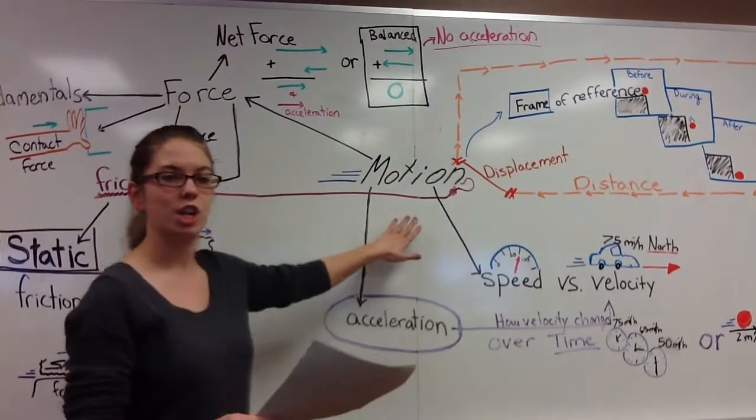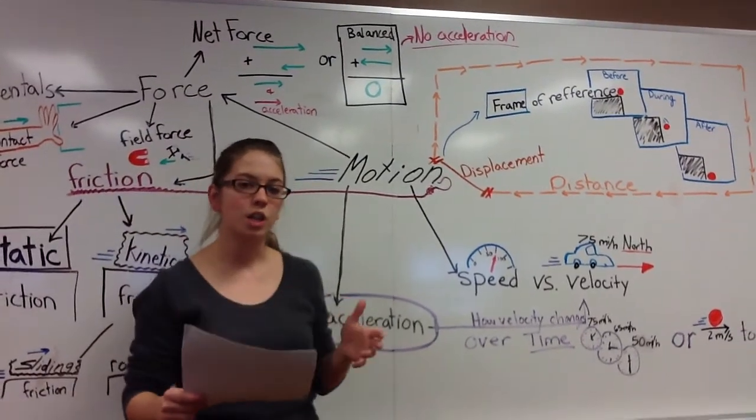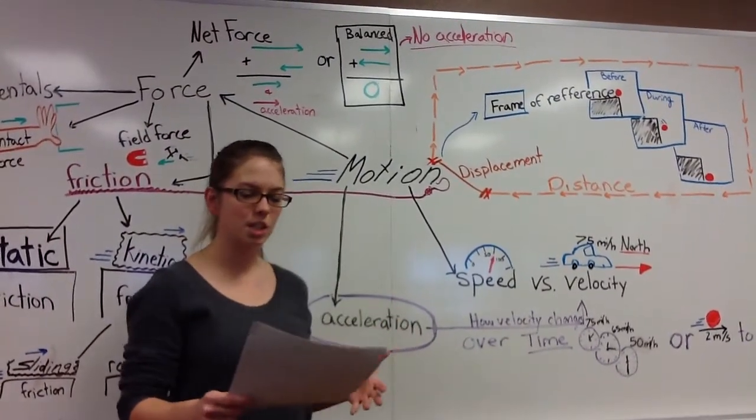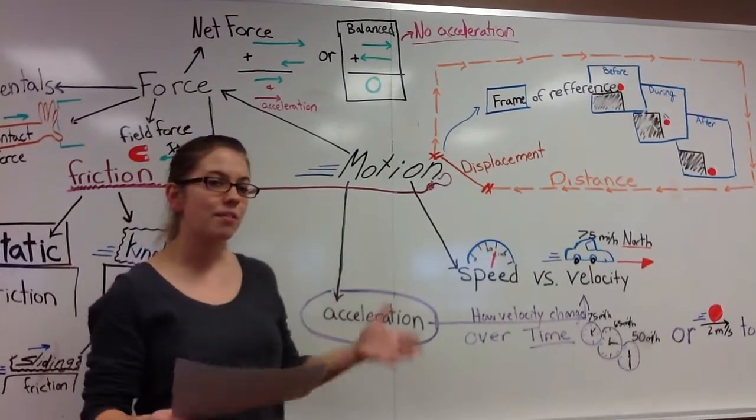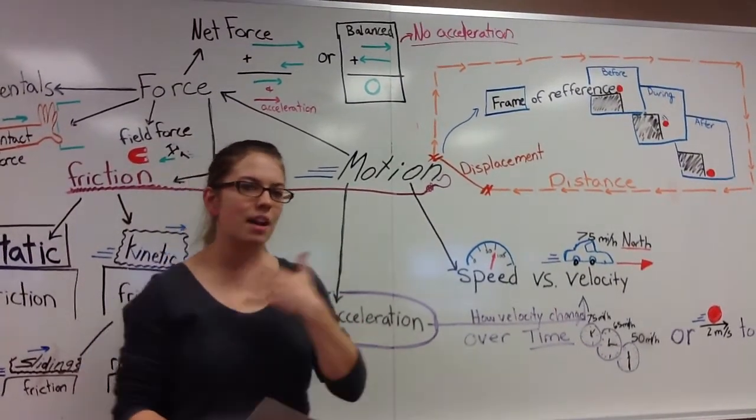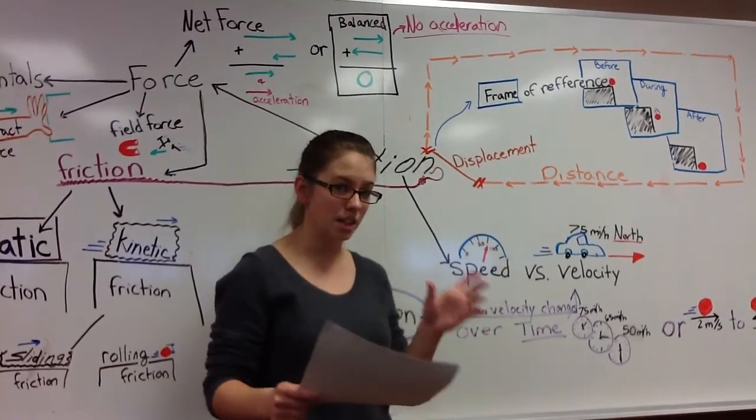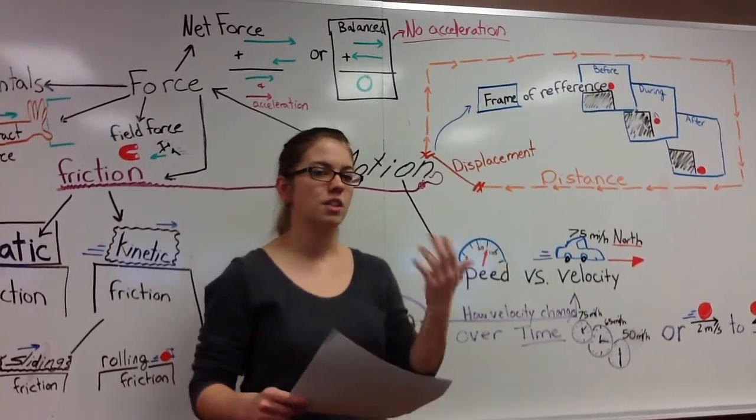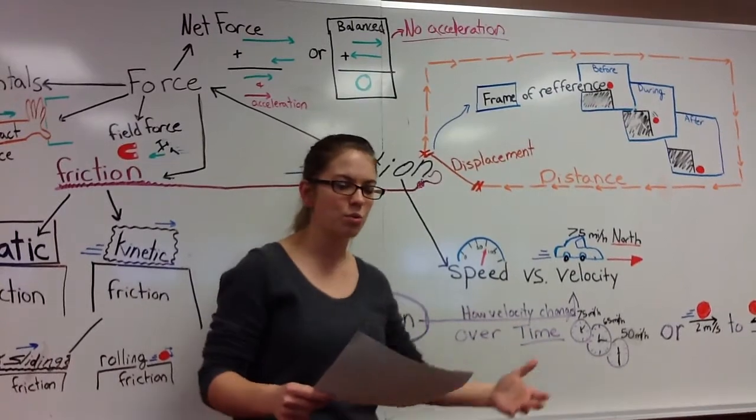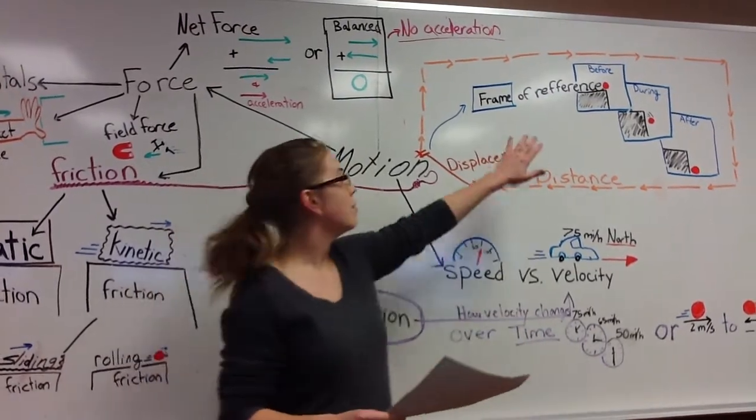The whole chapter is about motion. Motion is something's change in position relative to some kind of a reference point. You may not have even thought of it, but we always look for things that aren't moving or things that are still in order to tell that something is actually moving. This is actually called a frame of reference.